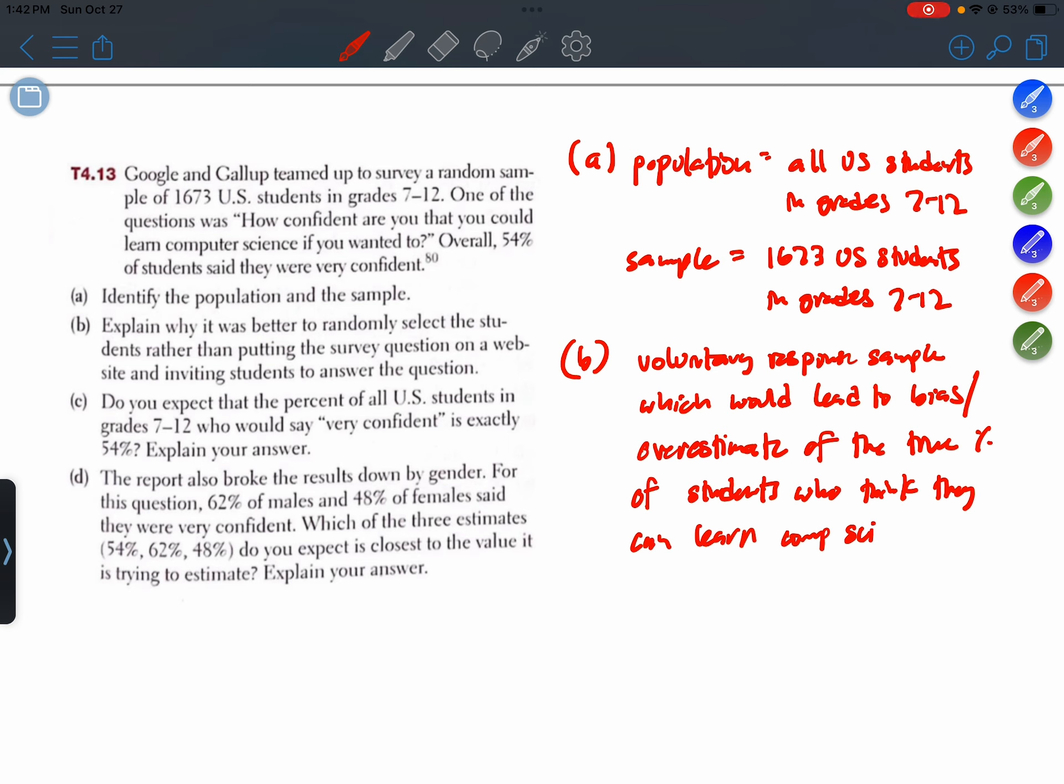And again, this is because the survey is online, so you've got to have a computer in the first place. And probably the ones who voluntarily respond are going to be the ones interested in computer science.